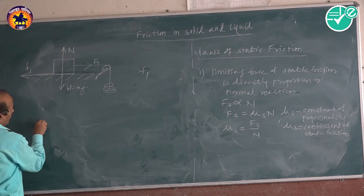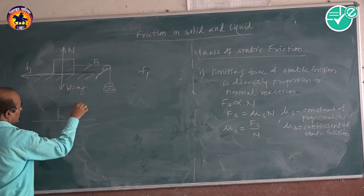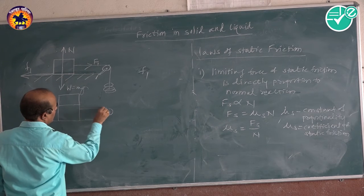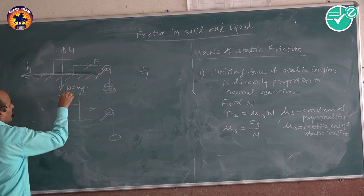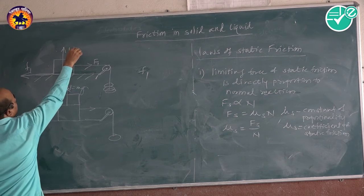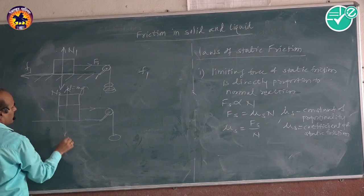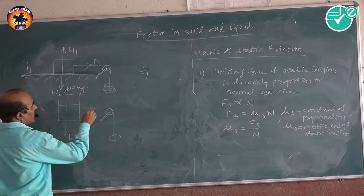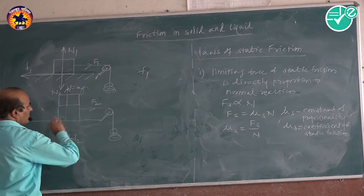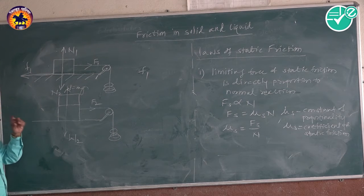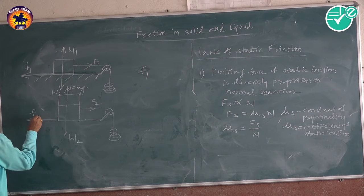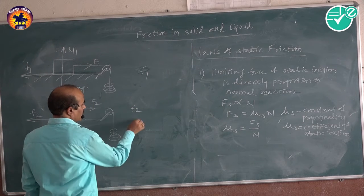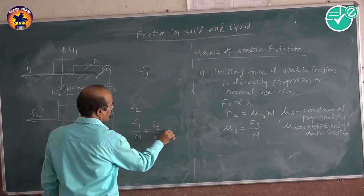In the second condition, we increase the weight on the block. The normal reaction is now N2 and the weight is W2. We apply force again, and suppose that force F2 causes the body to just move. Note down F2 as the frictional force. We can then find that F1 ÷ N = F2 ÷ N = constant.